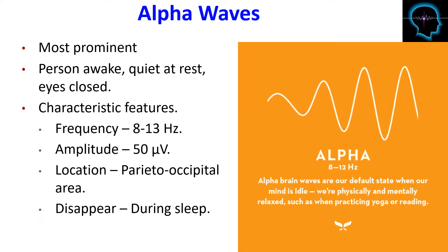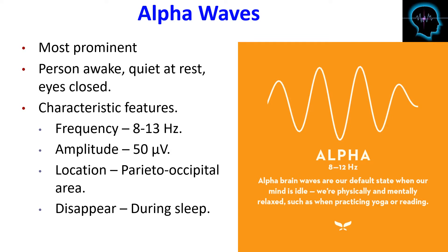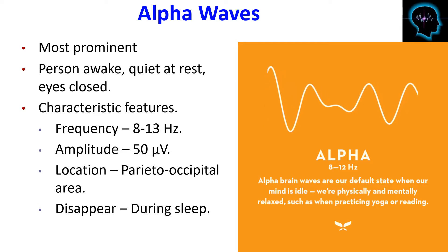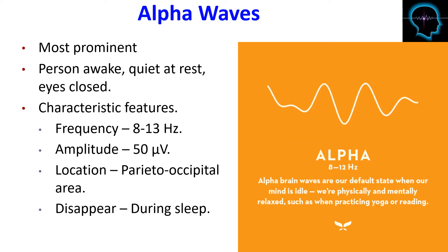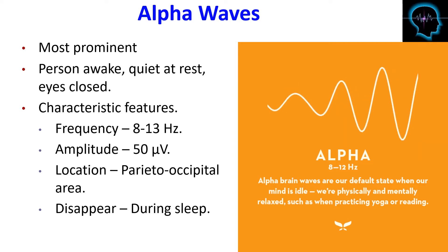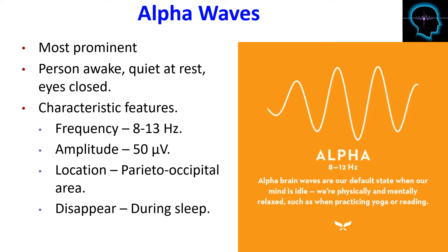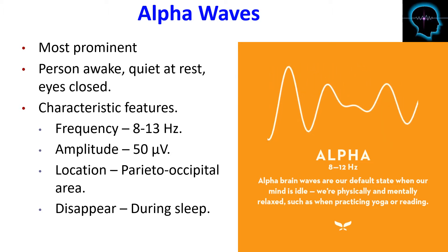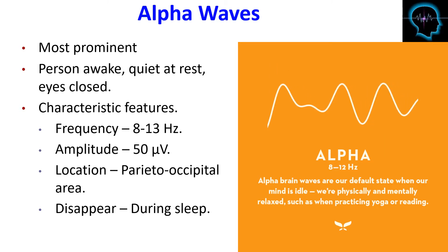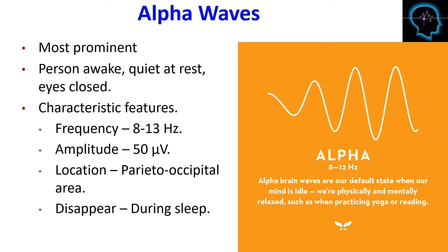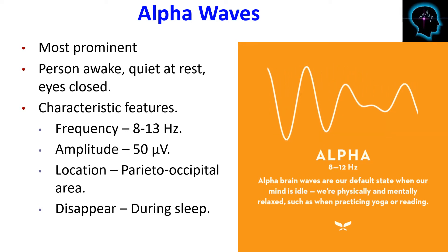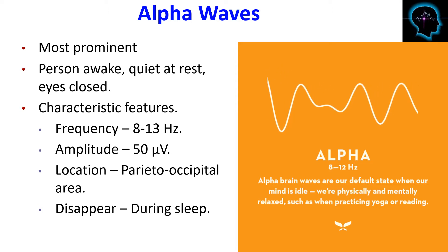Alpha waves are the most prominent component of the EEG, obtained from individuals who are awake but quiet and at rest with eyes closed. They arise from the spontaneous activity of the non-specific thalamocortical system. Their characteristic features are: frequency of 8 to 13 Hz, amplitude of 50 microvolts, location in the parieto-occipital region of the scalp, and they disappear during sleep.